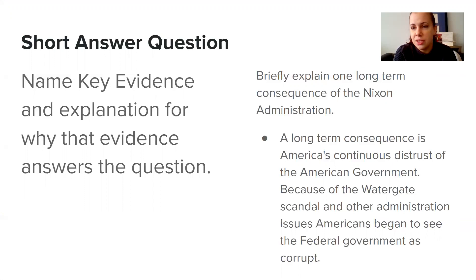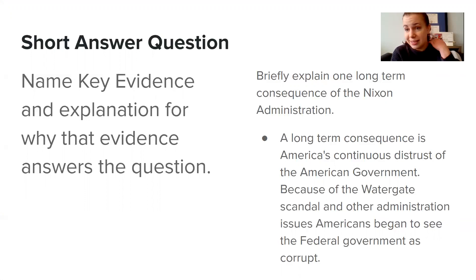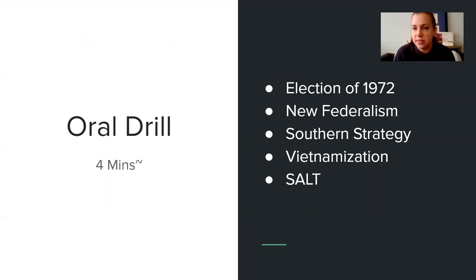I want you to take one minute to silently reflect on the way that you have been answering your short answer questions and what the gap is. Today's exit ticket is a short answer question, and I hope to see a greater depth of detail and explanation in our answers today. Be sure to reflect on your action step for today's exit ticket. These are the five terms you will see in your Google Form quiz: the election of 1972, New Federalism, Southern Strategy, Vietnamization, and SALT. These have come out of the last two lectures on Nixon.